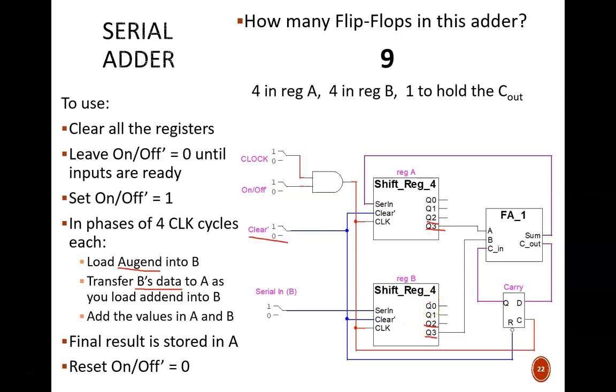While all this is happening, the sum bits are shifted back around into register A. This means that at the end of the process, these four bits will hold the final sum. And at this point, we can flip the on-off switch low. It really is hard to believe that this small circuit accomplishes all that.